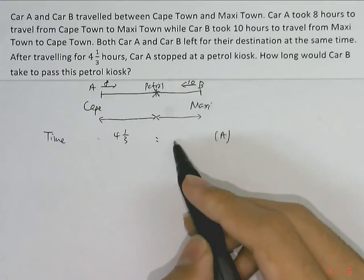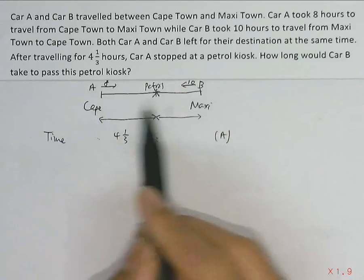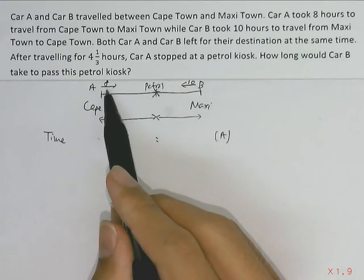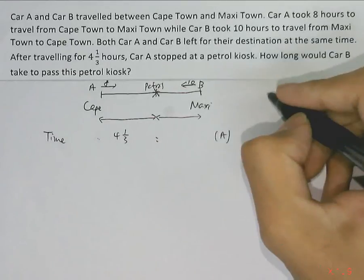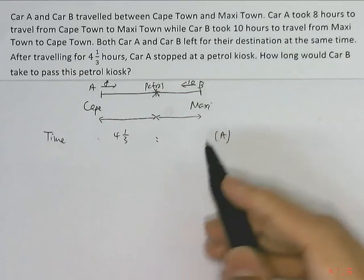What about the remaining time? Since the total distance from Cape Town to Maxi Town is 8 hours, we can find the time taken from petrol kiosk to Maxi Town.